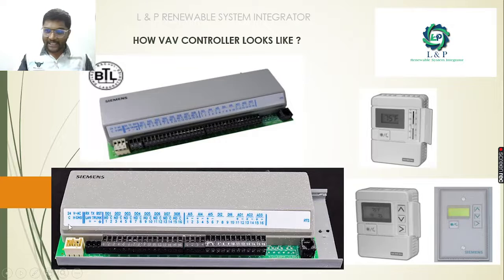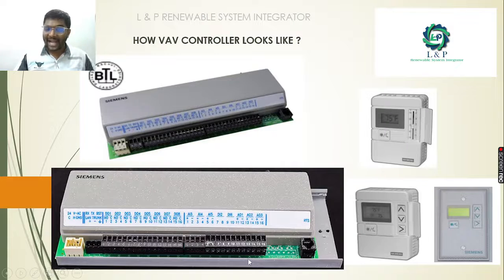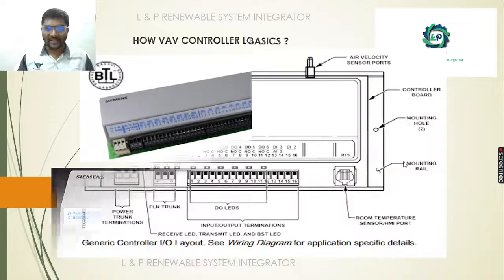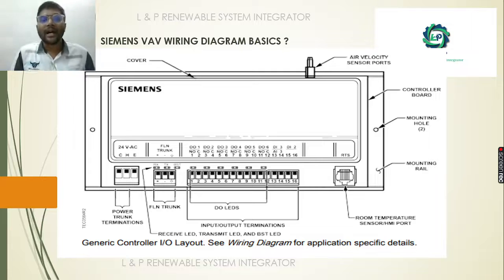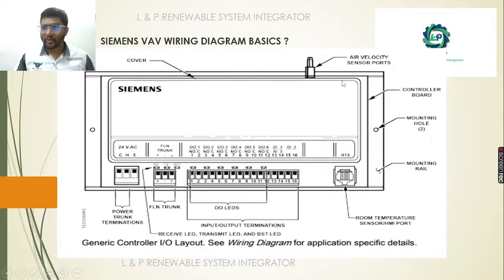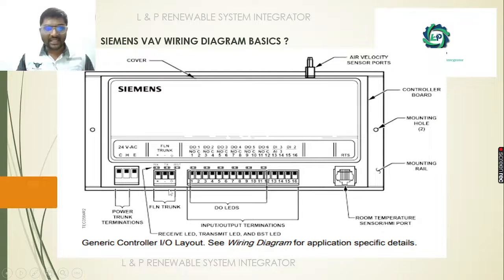This is how the VAV application specific terminal box controller looks. It has power supply terminals, communication terminals, digital output terminals to command outputs, and analog input, analog output, and digital input terminals for monitoring. The RTS port is where we connect the room temperature sensor. This is the basic wiring diagram of this VAV. For the air velocity tubes we have air velocity ports, mounting holes and mounting rails for fixing in the control panel, RTS for the room temperature sensor, floor level network for communication, 24V AC for power wiring, and a terminal block for all inputs and outputs.